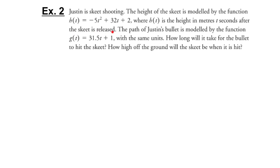The path of Justin's bullet is modeled by g(t) equals 31.5t plus 1, with the same units — meters and seconds. How long will it take for the bullet to hit the skeet? How high off the ground will the skeet be when it is hit? The skeet follows a quadratic function; the bullet follows a straight line. So we're solving a linear quadratic system.